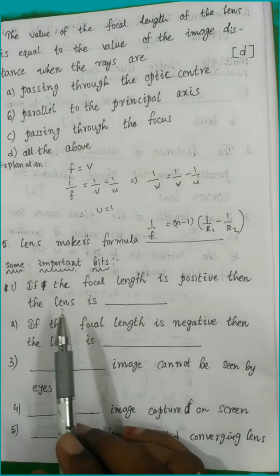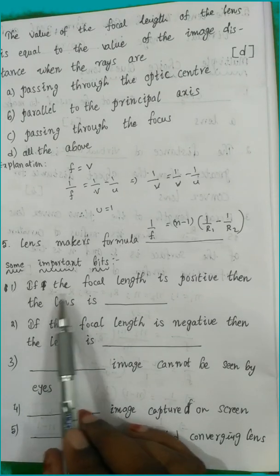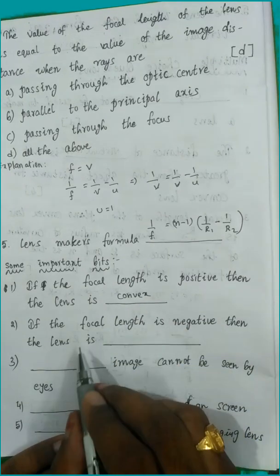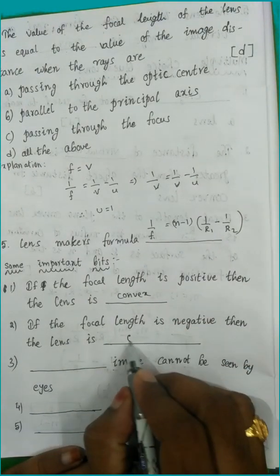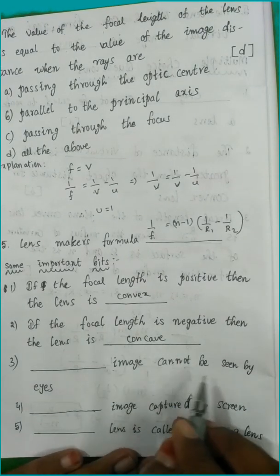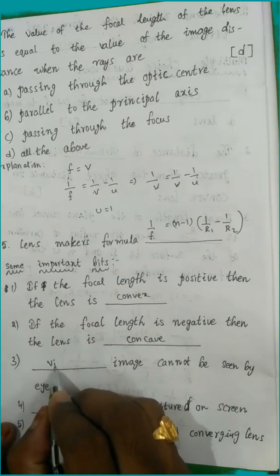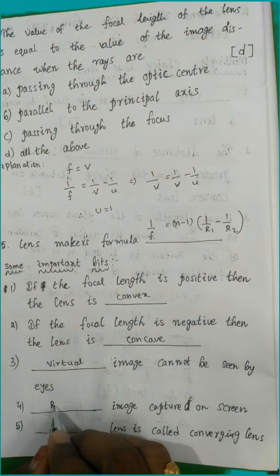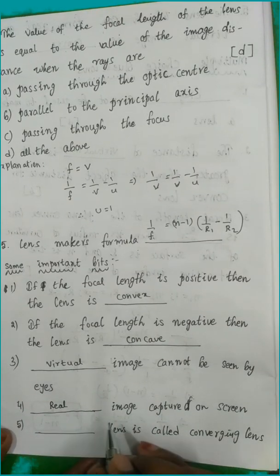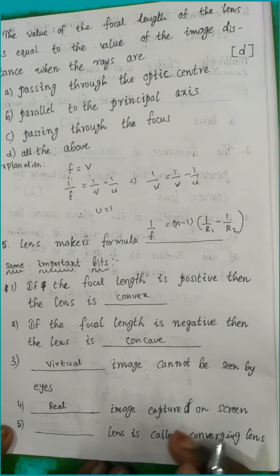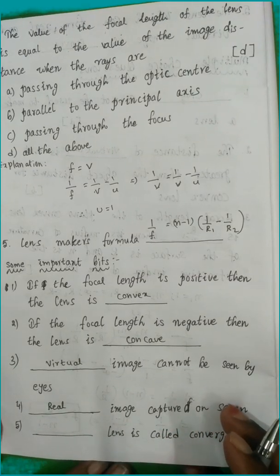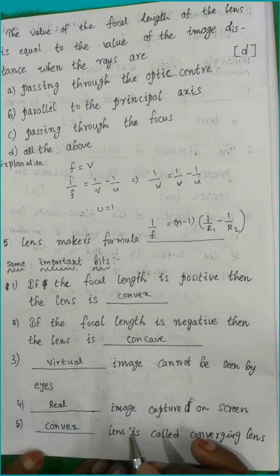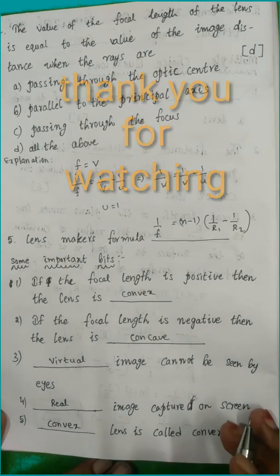Some more important points from the textbook: if the focal length is positive, the lens is a convex lens; if negative, it is a concave lens. Virtual images cannot be seen by the eye directly, while real images can be captured on a screen. A convex lens is called a converging lens because it focuses parallel rays to a single point.